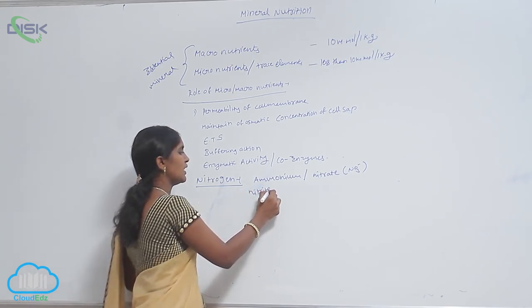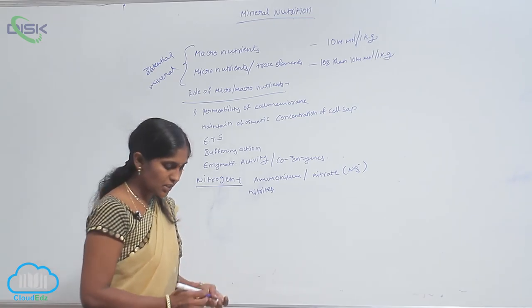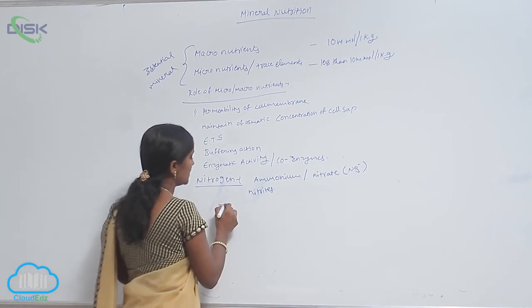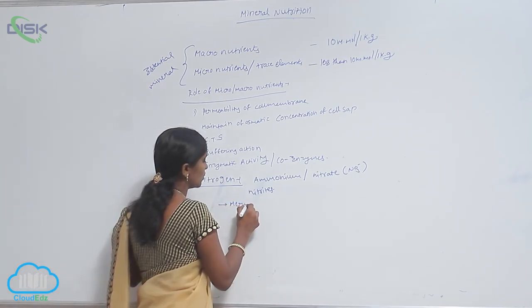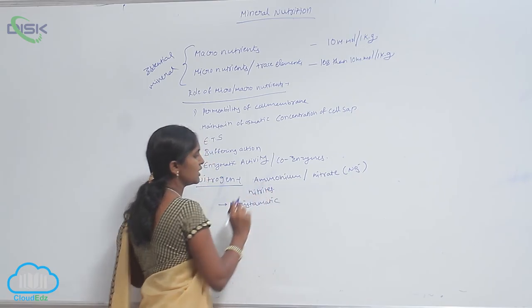Nitrogen is required in all parts of the plant body, especially meristematic tissue which requires more.